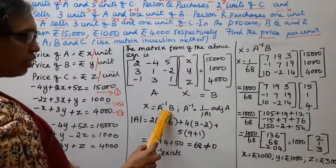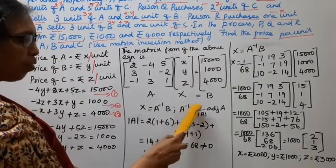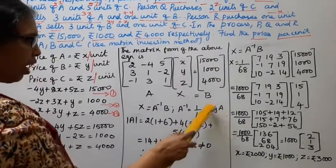Matrix inversion method. A inverse 1 by determinant of A into adjoint A.